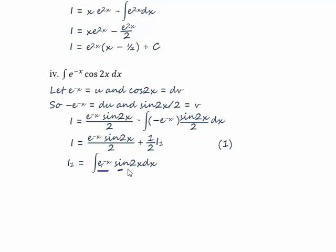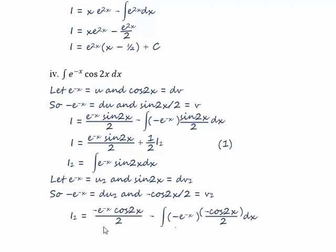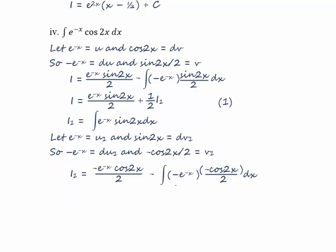We still have two factors in x, so we use the same technique a second time. Let u1 equal e to the minus x and dv1 equal sine(2x). Differentiating gives minus e to the minus x, and integrating sine(2x) gives minus cos(2x) over 2. Integrating du1 gets us back to e to the minus x, and differentiating minus cos(2x) over 2 gives minus 2 times minus cos(2x) over 2 — the minuses and the 2s cancel giving sine(2x), so that's correct. So i1 equals minus e to the minus x·cos(2x) over 2, plus a half times the integral of e to the minus x·cos(2x). Notice that last integral is the same as our starting point, so we can replace it with i, giving minus half·i.